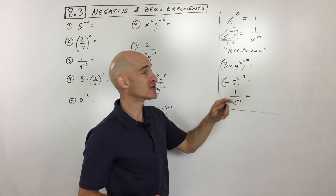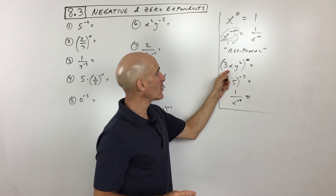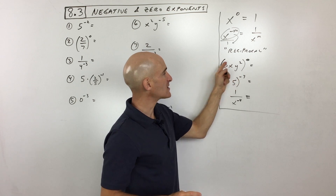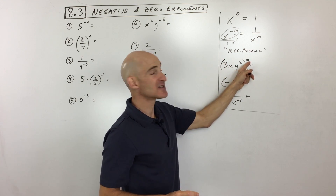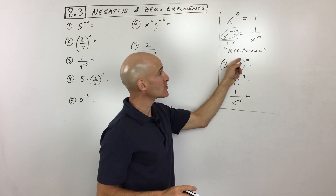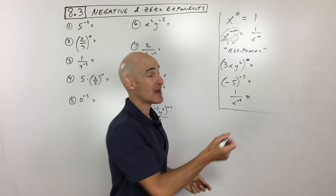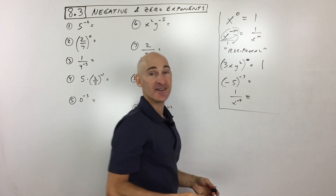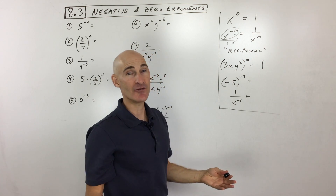Let's look at some examples. What do you think for 3xy², all raised to the zero? Well, this whole thing is raised to the zero, so that means it equals one. Pretty easy, right?